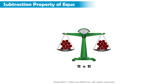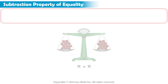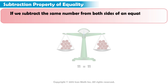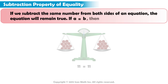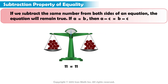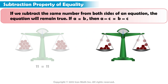The subtraction property of equality is very similar. It states that if we subtract the same number from both sides of an equation, the equation will remain true. If A equals B, then A minus C equals B minus C. Let's remove 7 counters from both sides of the pan balance. You see that 4 counters are left on both sides of the pan balance, and the pan balance is level. If we subtract 7 from both sides of the equation, we get a new equation, 4 equals 4. This equation is also true.